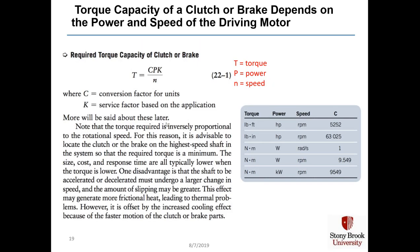The torque capacity formula is T = P × k / n, where P is power, T is torque, and n is speed in RPM. C is a unit conversion factor shown in the table, and k is a service factor based on your application. The torque required is inversely proportional to speed, so you should locate the clutch or brake on the highest-speed shaft in the system to minimize required torque. Size, cost, and response times are all typically lower when torque is lower.